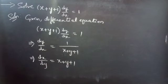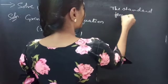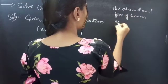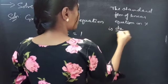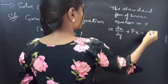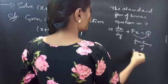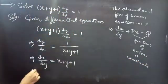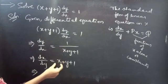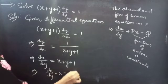So now we need to reduce the given equation to the standard form of a linear equation in x. We know that the standard form of linear equation in x is dx/dy + P·x = Q, where P and Q are functions of y alone or constants. So we will take the term or function of x to the LHS. Then you will get dx/dy − x = y + 1.